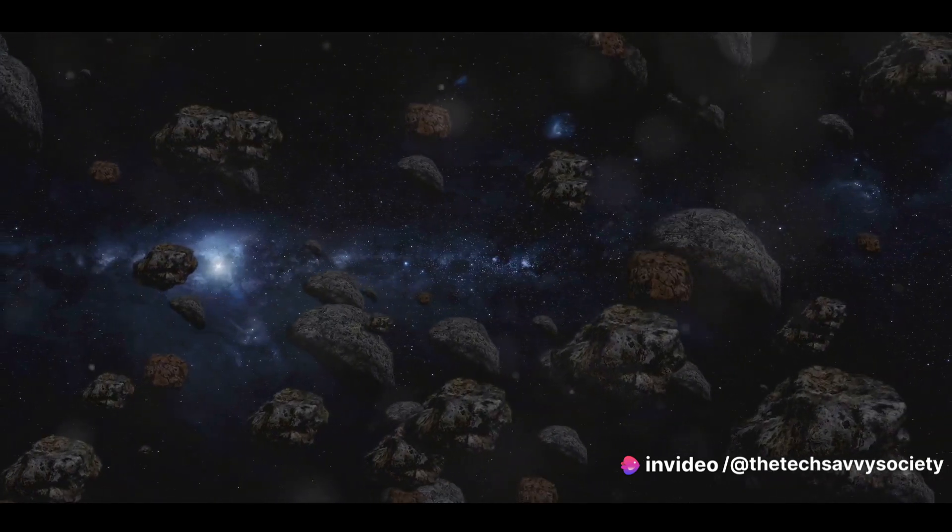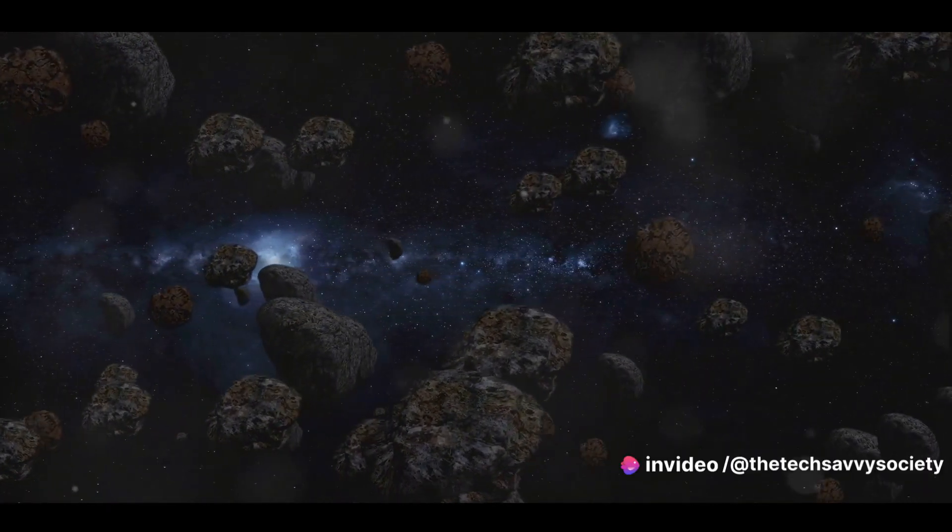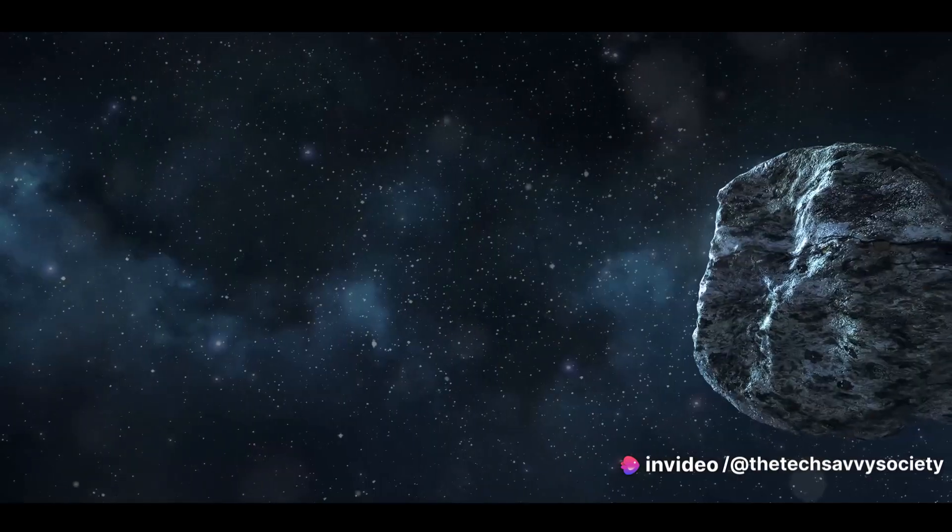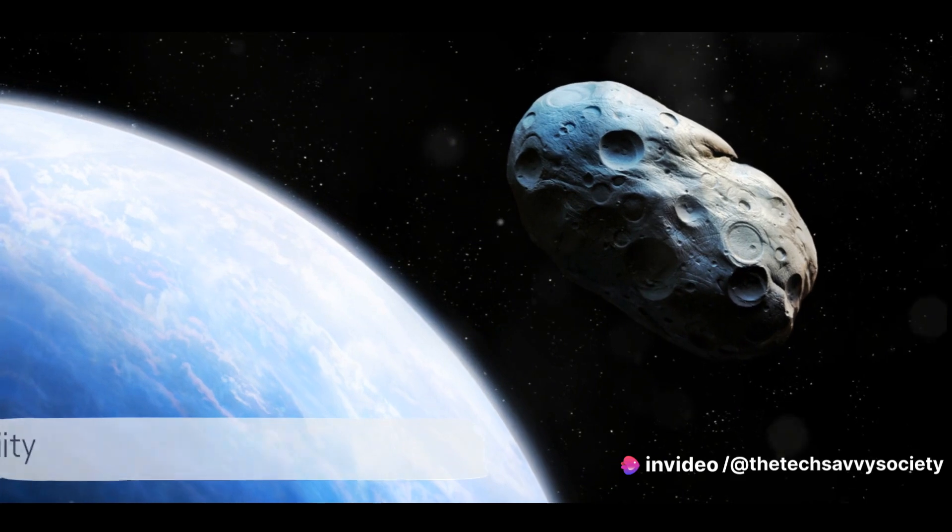Any remnants that hit the ground are known as meteorites. Asteroids are essentially remnants of our solar system's formation, zipping around at great speeds. But how often do they come close to Earth? Let's take a closer look in the next section.